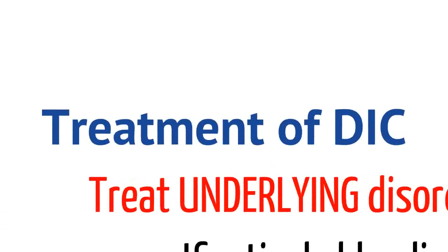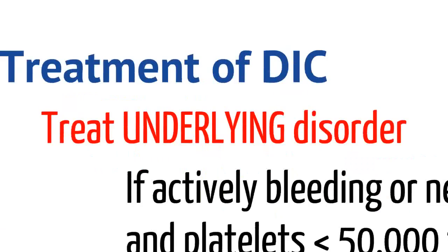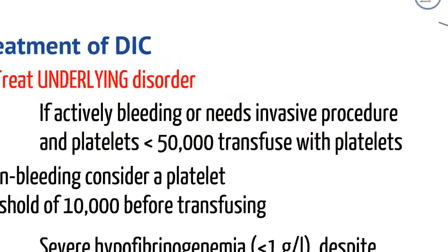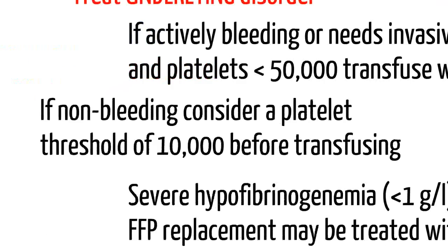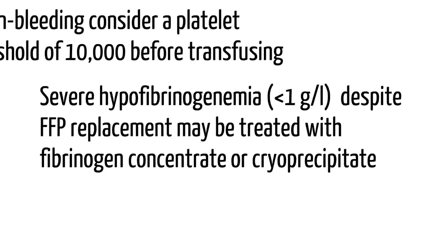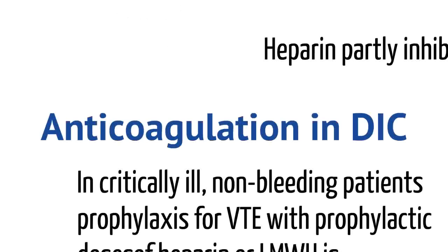We've gone over diagnosis. Let's talk about treatment for DIC. You always want to treat the underlying disorder, because DIC is a secondary diagnosis. But if the patient is actively bleeding or needs an invasive procedure and the platelets are less than 50,000, go ahead and transfuse them with platelets. In non-bleeding patients, the general goal is greater than 10,000 platelets, because below that, the risk of spontaneous bleeding is very high. For patients with severe hypofibrinogenemia — less than 1 gram per liter — even after FFP, you can consider cryoprecipitate, though there's no data to suggest it improves outcomes in DIC patients.